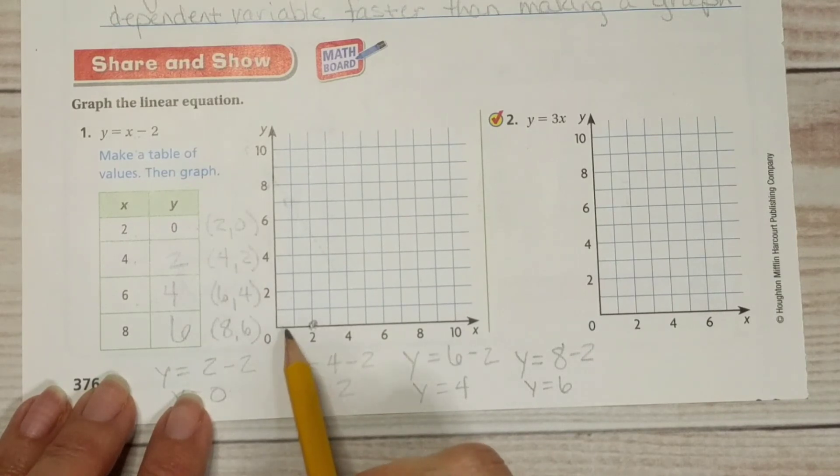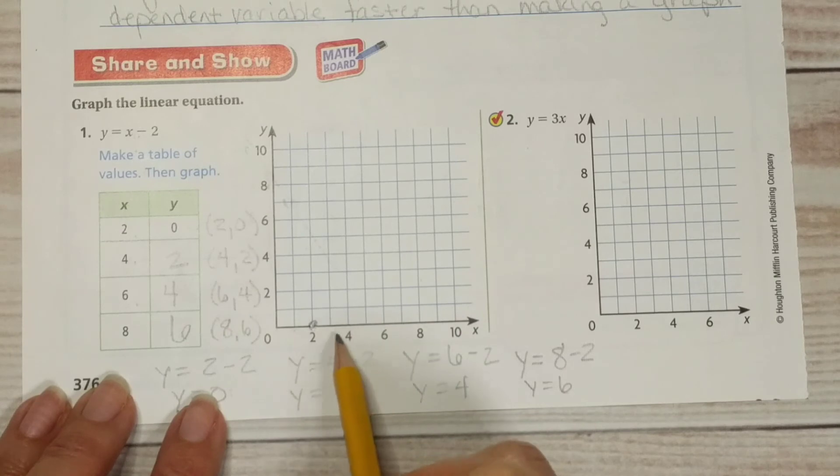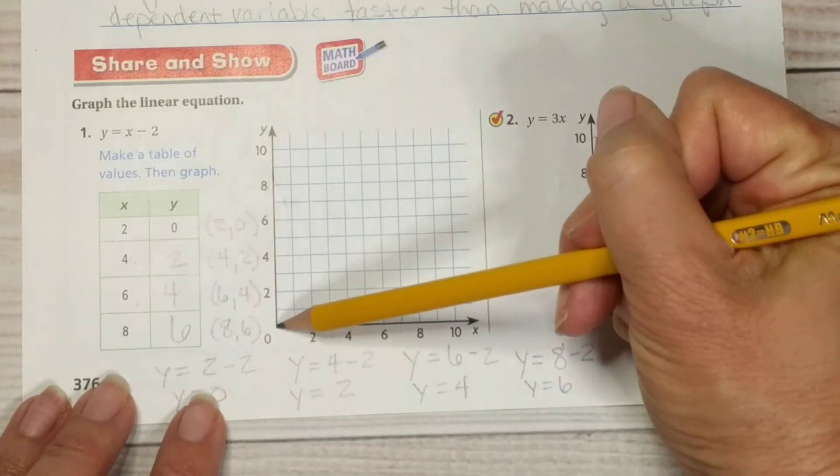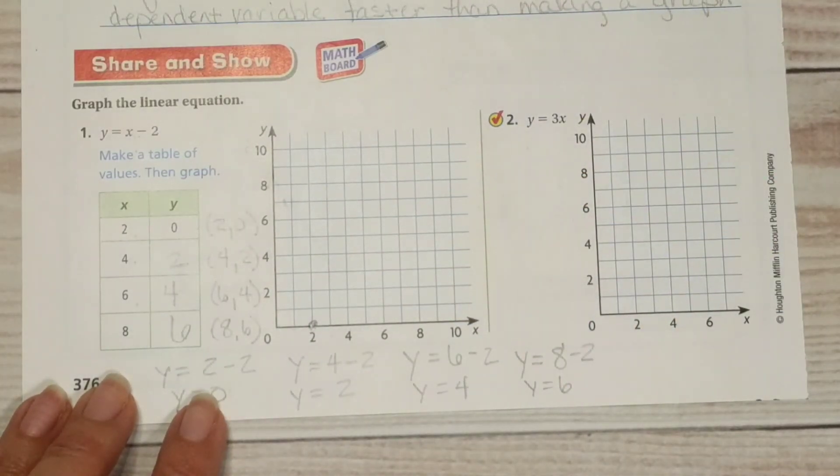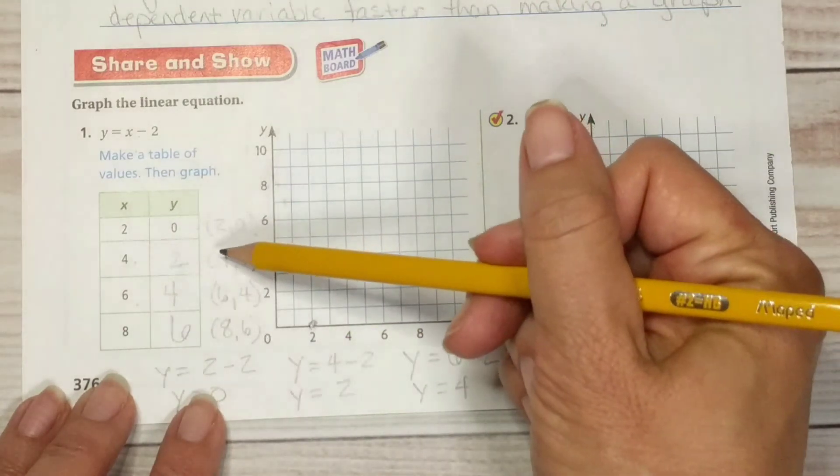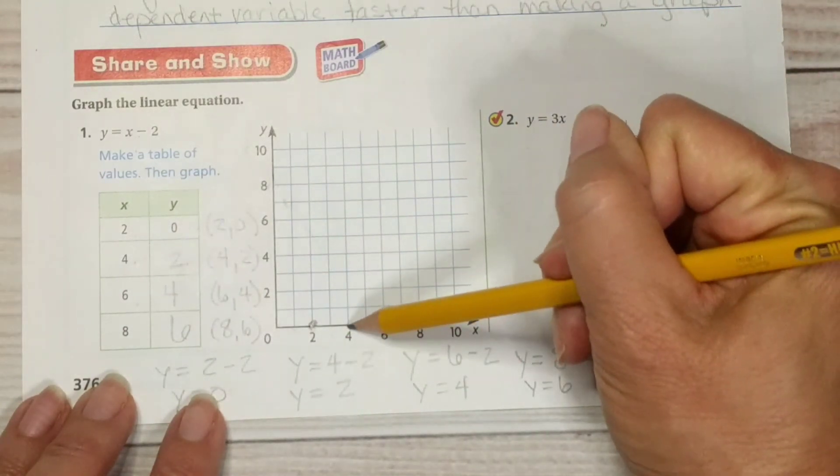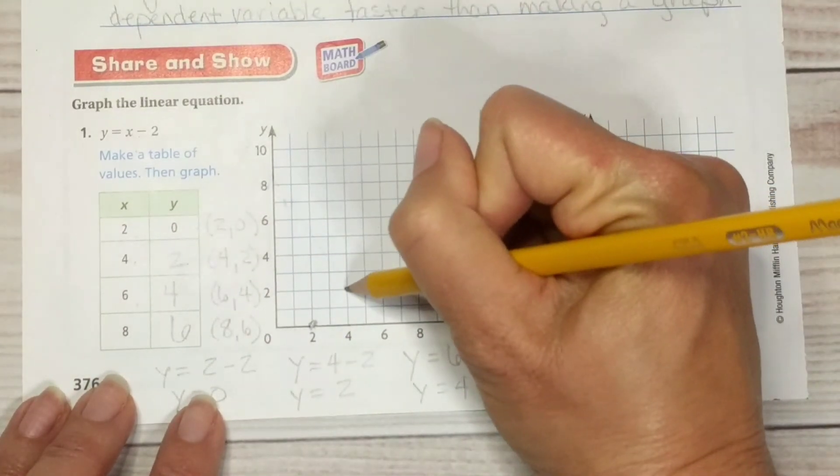Now let's go ahead and graph these ordered pairs. So our first one is 2, 0. 4, 2. 6, 4. 8, 6. Okay we have 2, 0 doesn't get to go up at all. Let's take a look at our intervals. They're actually so that we have 2, 0, 4.